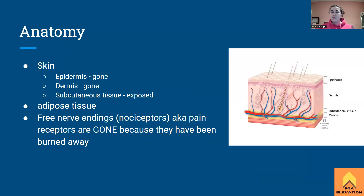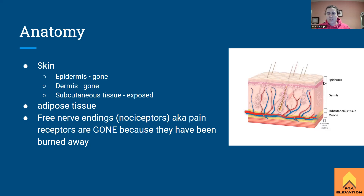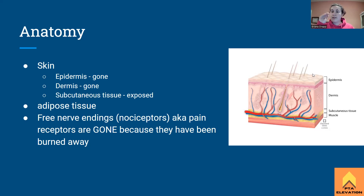Let's go over the anatomy first. When we're talking about burns, we're talking about the skin. There are different parts of the body you can burn — you can even burn your eyes — but in the scope of the boards we're just talking about the skin. The epidermis is on top with its five layers of tissue; the basal layer at the bottom is a common site for skin cancer, basal cell carcinoma. If you burn just the epidermis, that's a first degree burn — a superficial burn, like a sunburn.